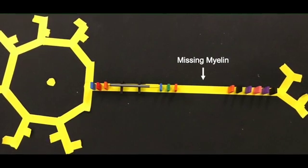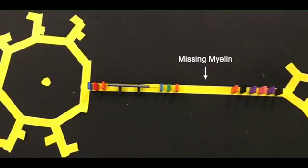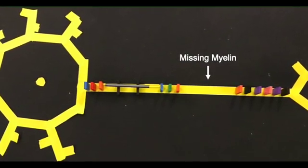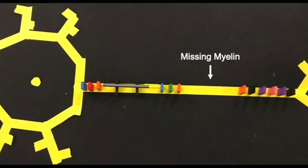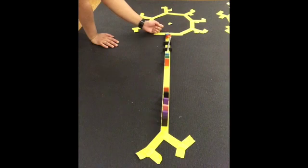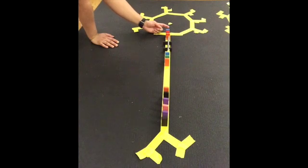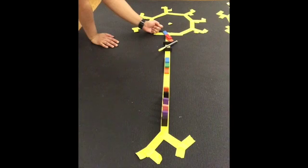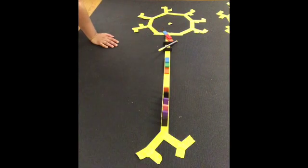Now think about what would happen if some myelin was removed or damaged from our myelinated axon. What would this do to our information transfer? As you saw, damaging myelin disrupts communication from one neuron to another, as is seen in demyelinating diseases like multiple sclerosis. This illustrates how important myelin is in disseminating information from one neuron to another.